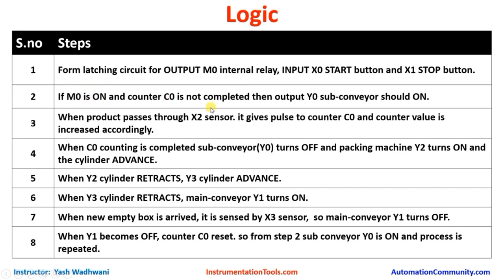If the process is on and counting is not completed, sub conveyor output Y0 should be on. Products pass through the conveyor; the X2 sensor senses each product and generates a rising edge pulse given to the counter, incrementing its value. When the set count given by the user equals the present count from X2, the sub conveyor should turn off and the packing machine Y2 should start.